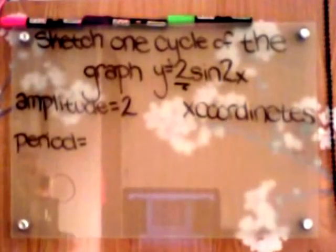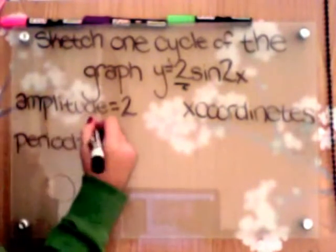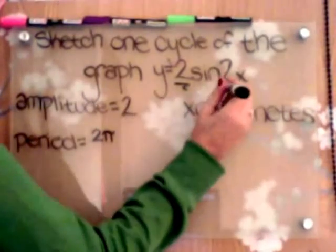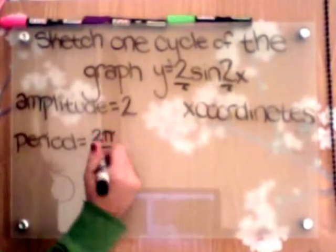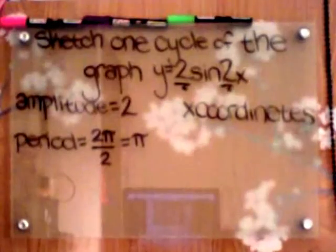To find the period, we are going to always divide 2π by the coefficient of x. We are going to divide 2π by 2, which is our coefficient of x, to get π. Now we have our period.